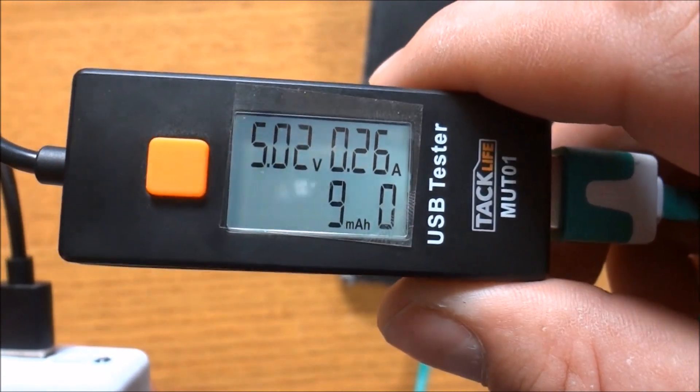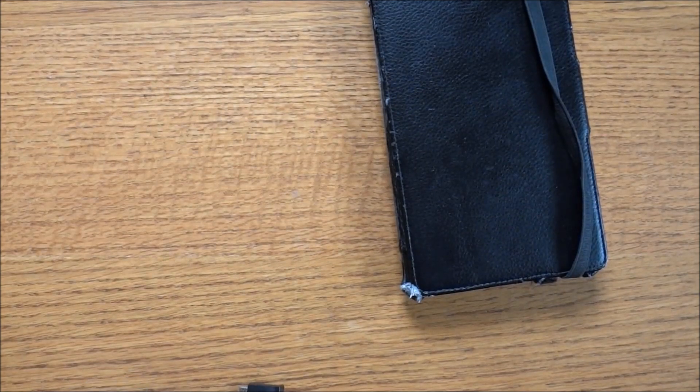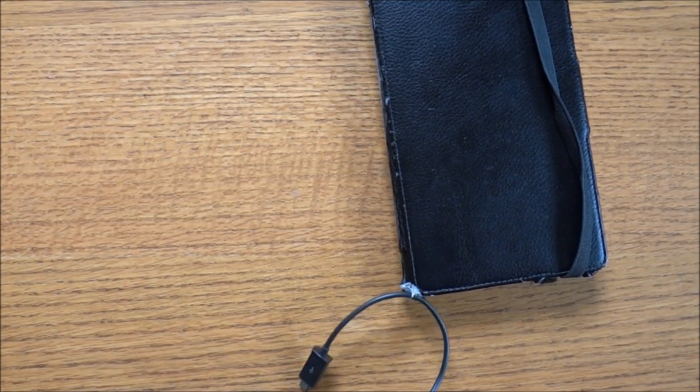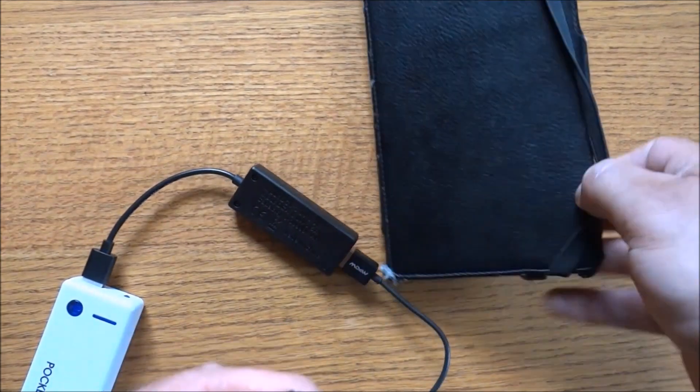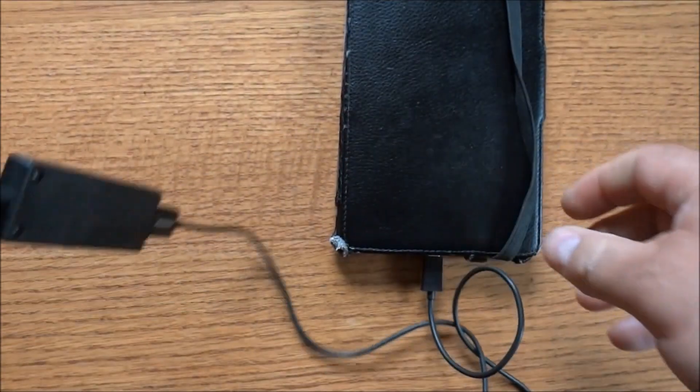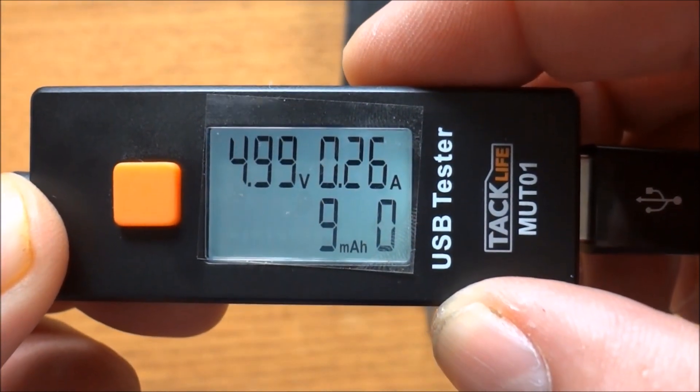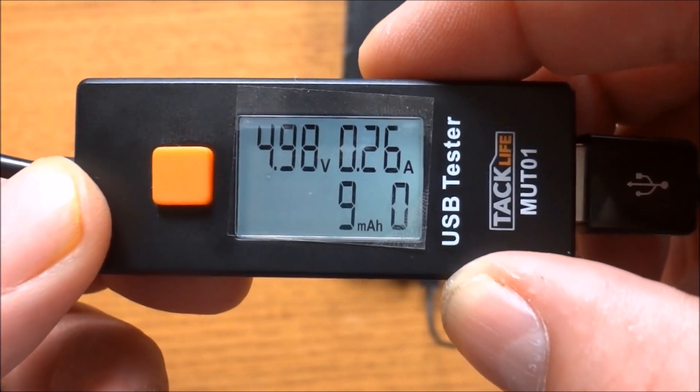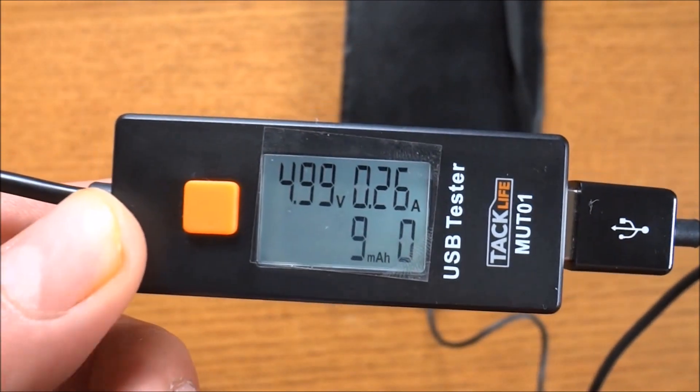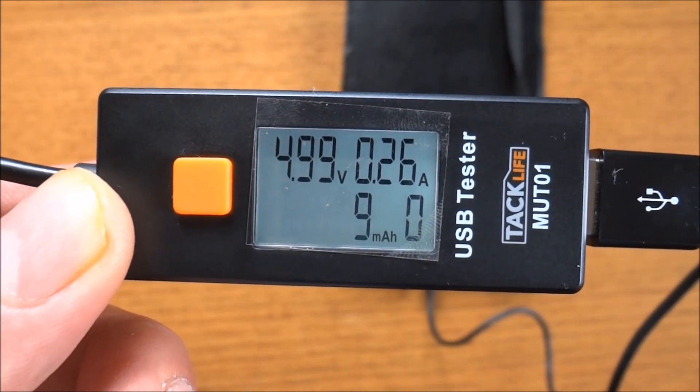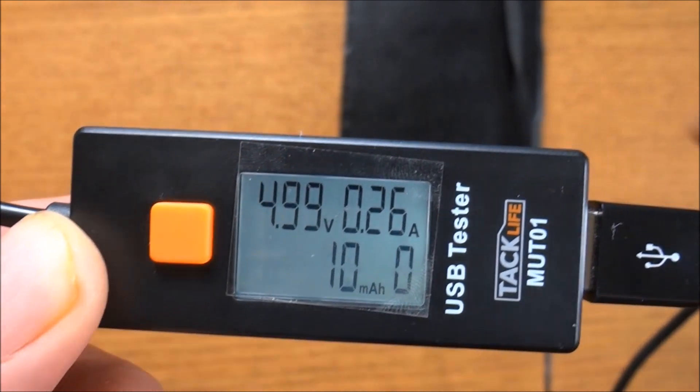Let's get rid of that cable and now I'm going to connect to my MPOW cable. Nice and plugged in, give this a few seconds to get going. As you can see, it's pretty consistent right now - 4.99 volts at 0.026 amps. That's what the Nexus 7 is pulling in.